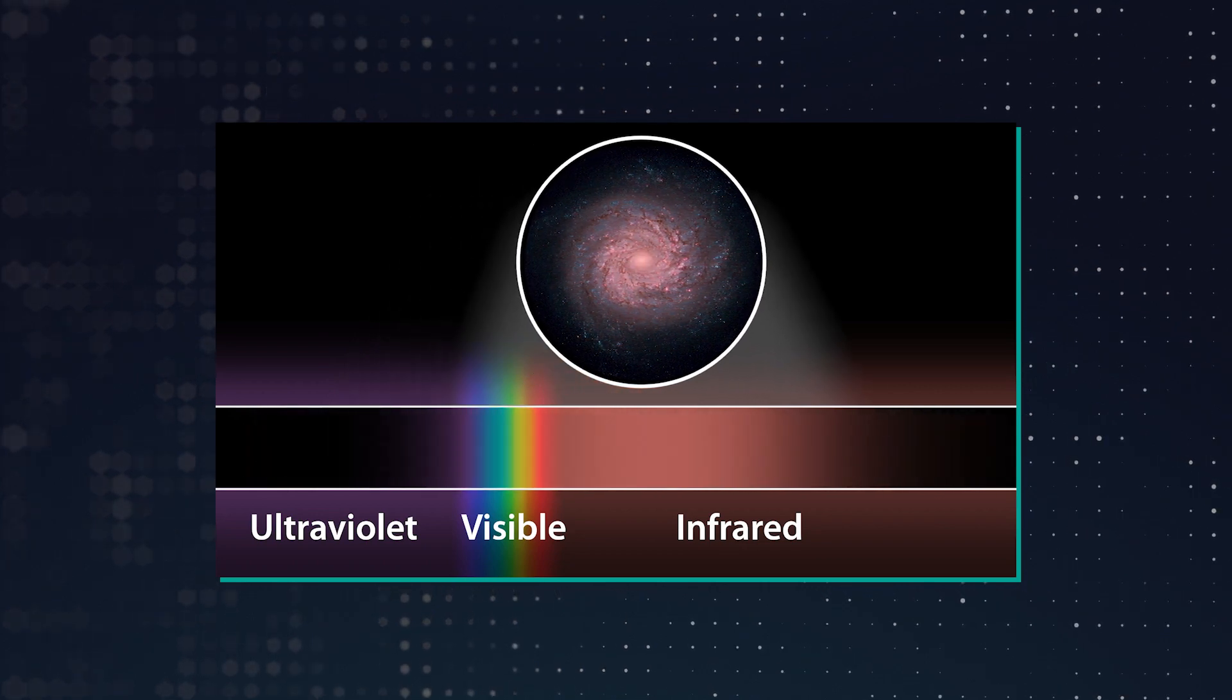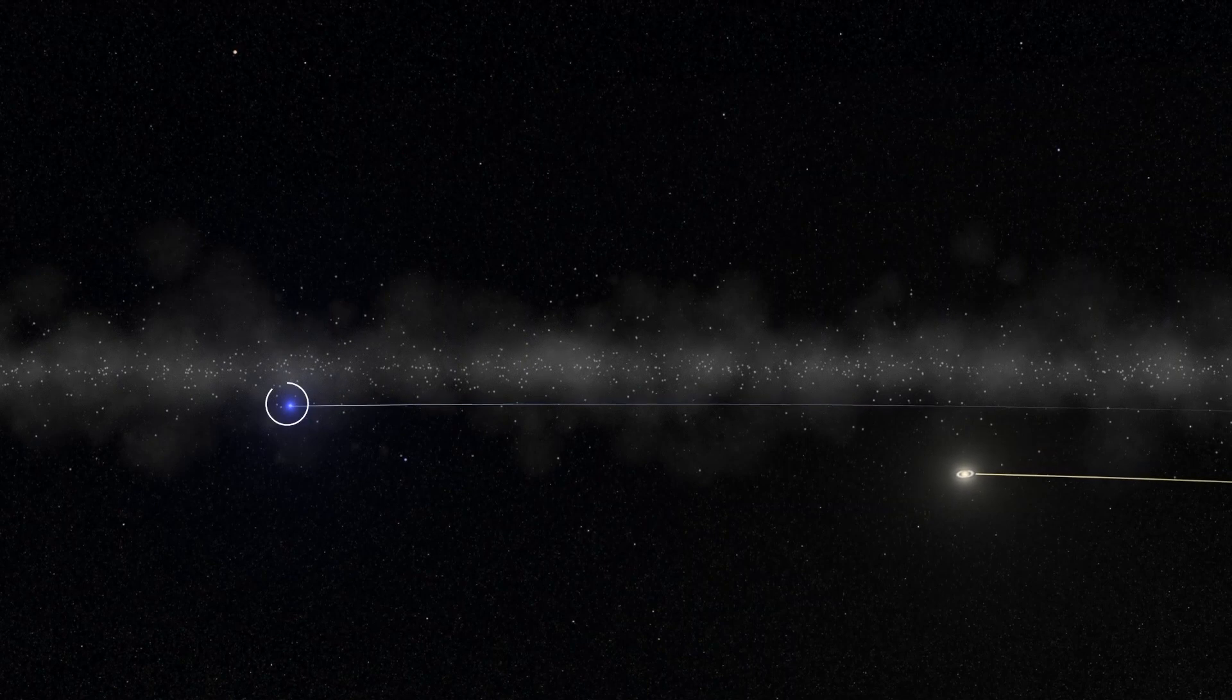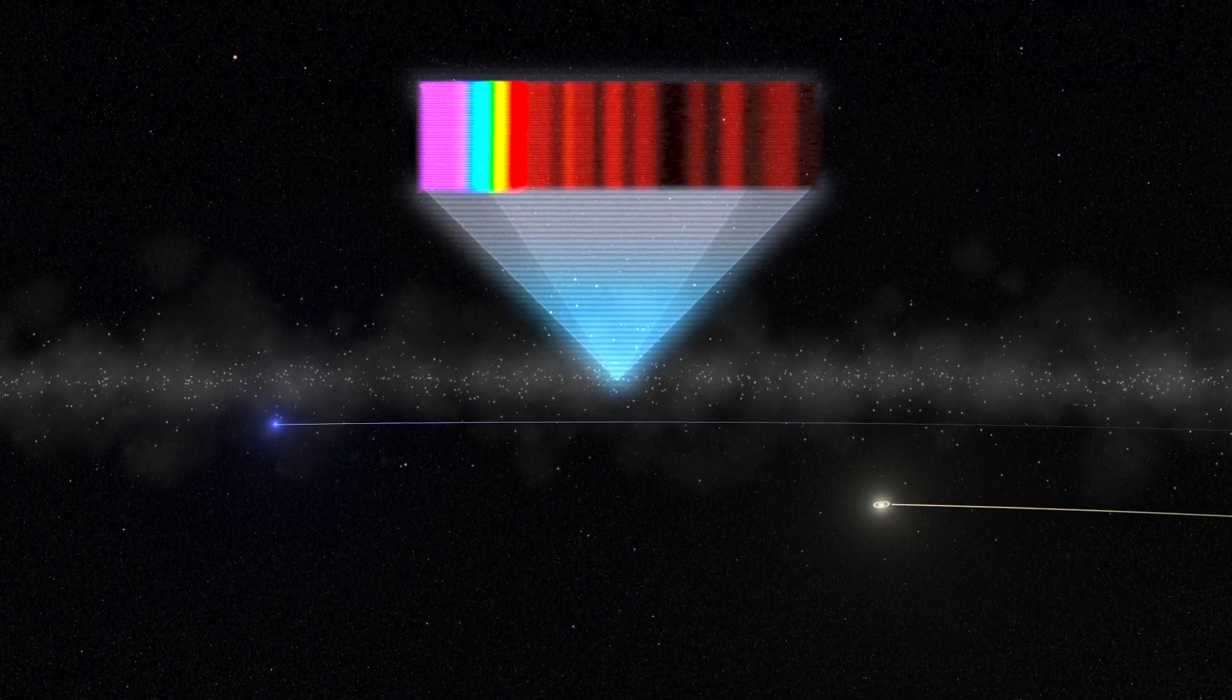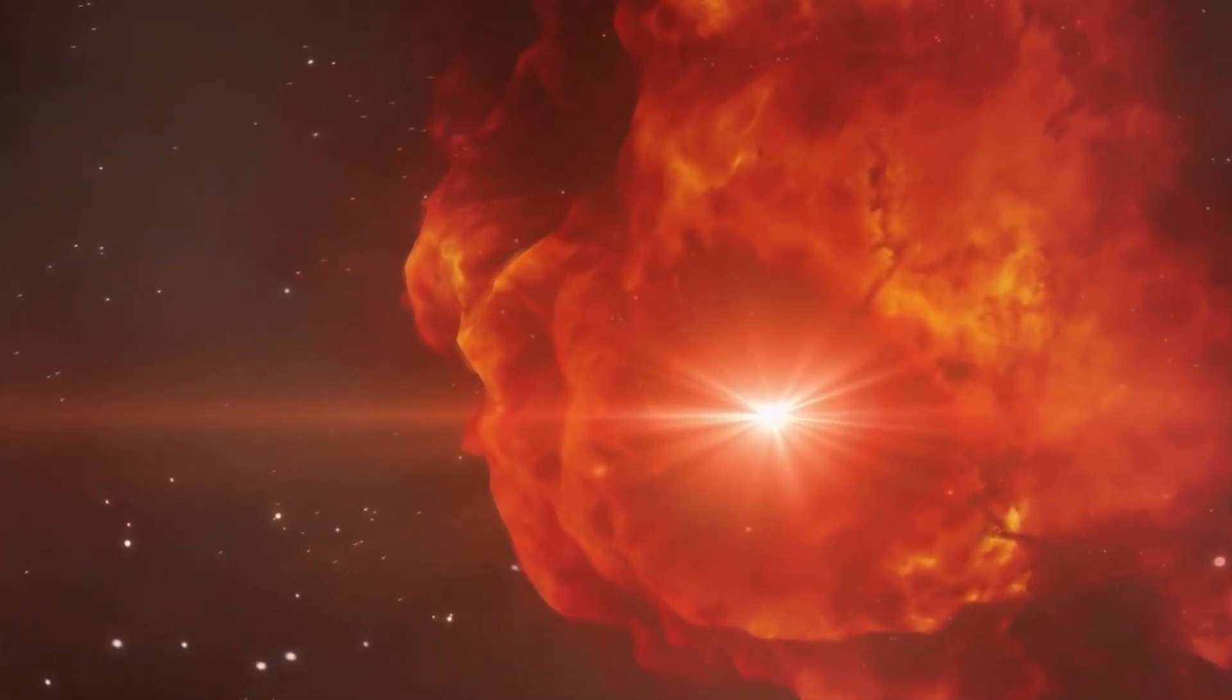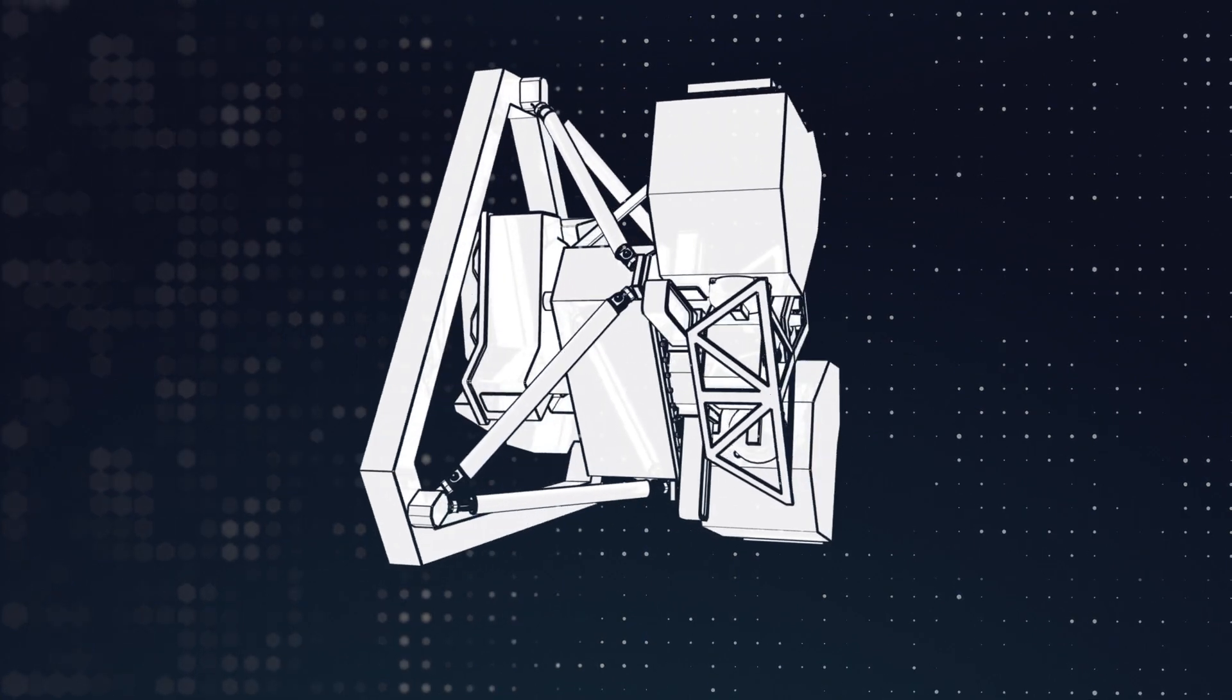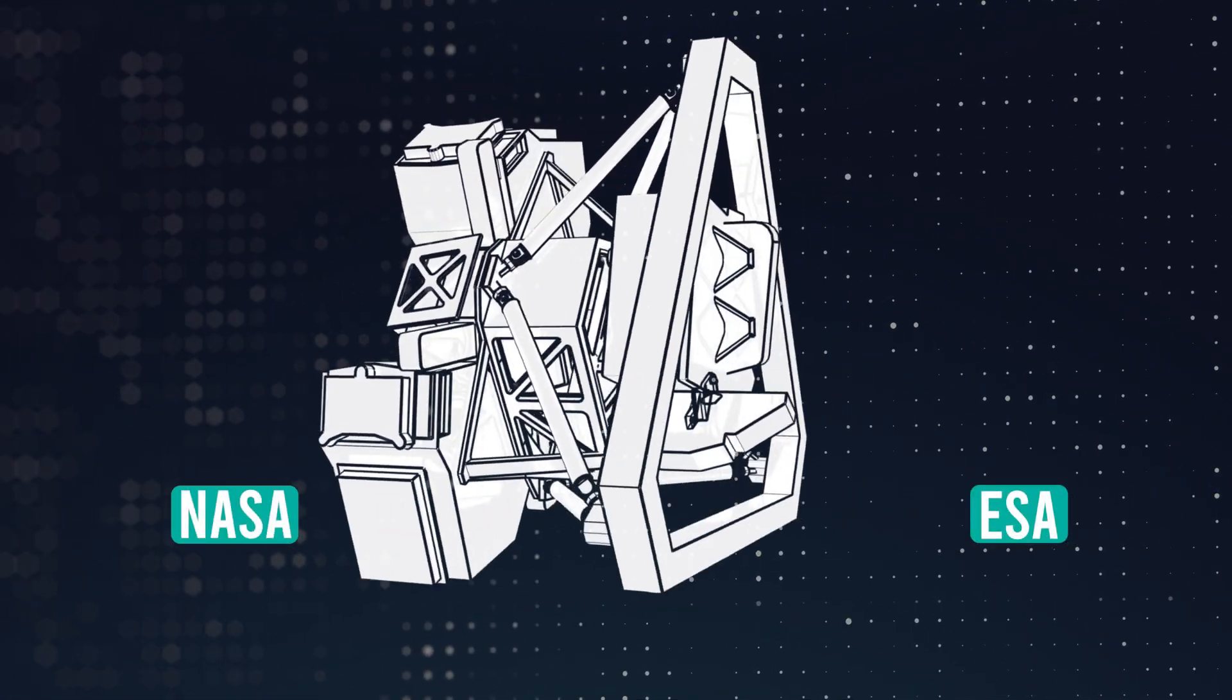Webb's science instruments detect infrared light, a range of wavelengths invisible to the human eye. MIRI detects the longest infrared wavelengths, which means it can often see cooler objects, including the dust rings, than Webb's other instruments can. MIRI's spectrometer also revealed the composition of the dust, formed mostly from material ejected by a type of star known as a Wolf-Rayet star. MIRI was developed through a 50-50 partnership between NASA and ESA, European Space Agency.